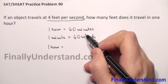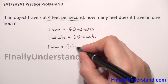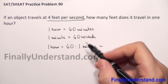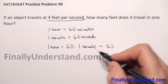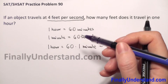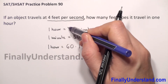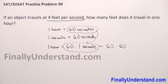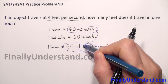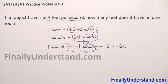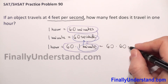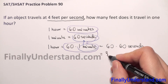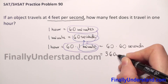We can rewrite 60 minutes as 60 times one minute. And we have that one minute is 60 seconds, so we substitute one minute by 60. We have 60 times 60, which equals 3,600 seconds.